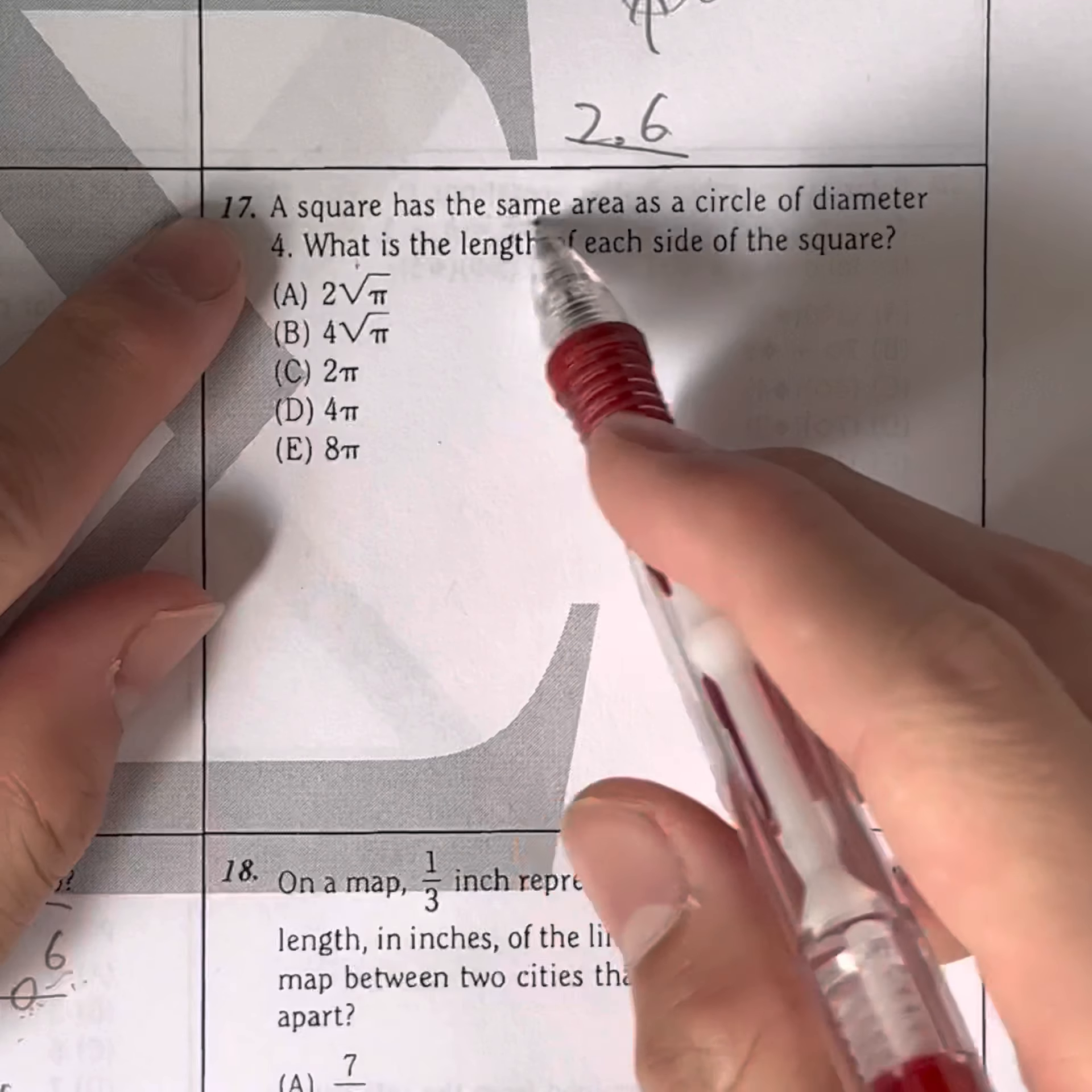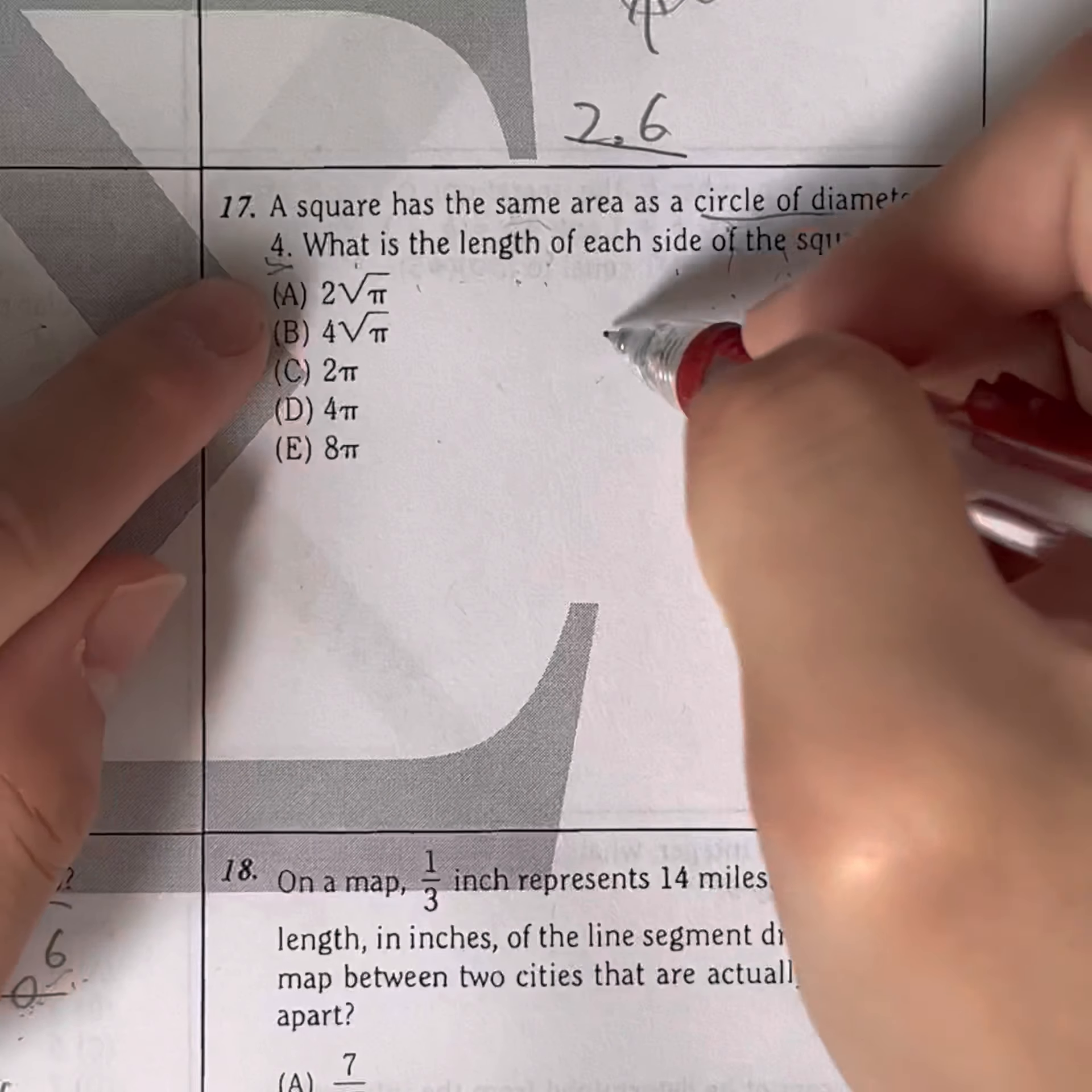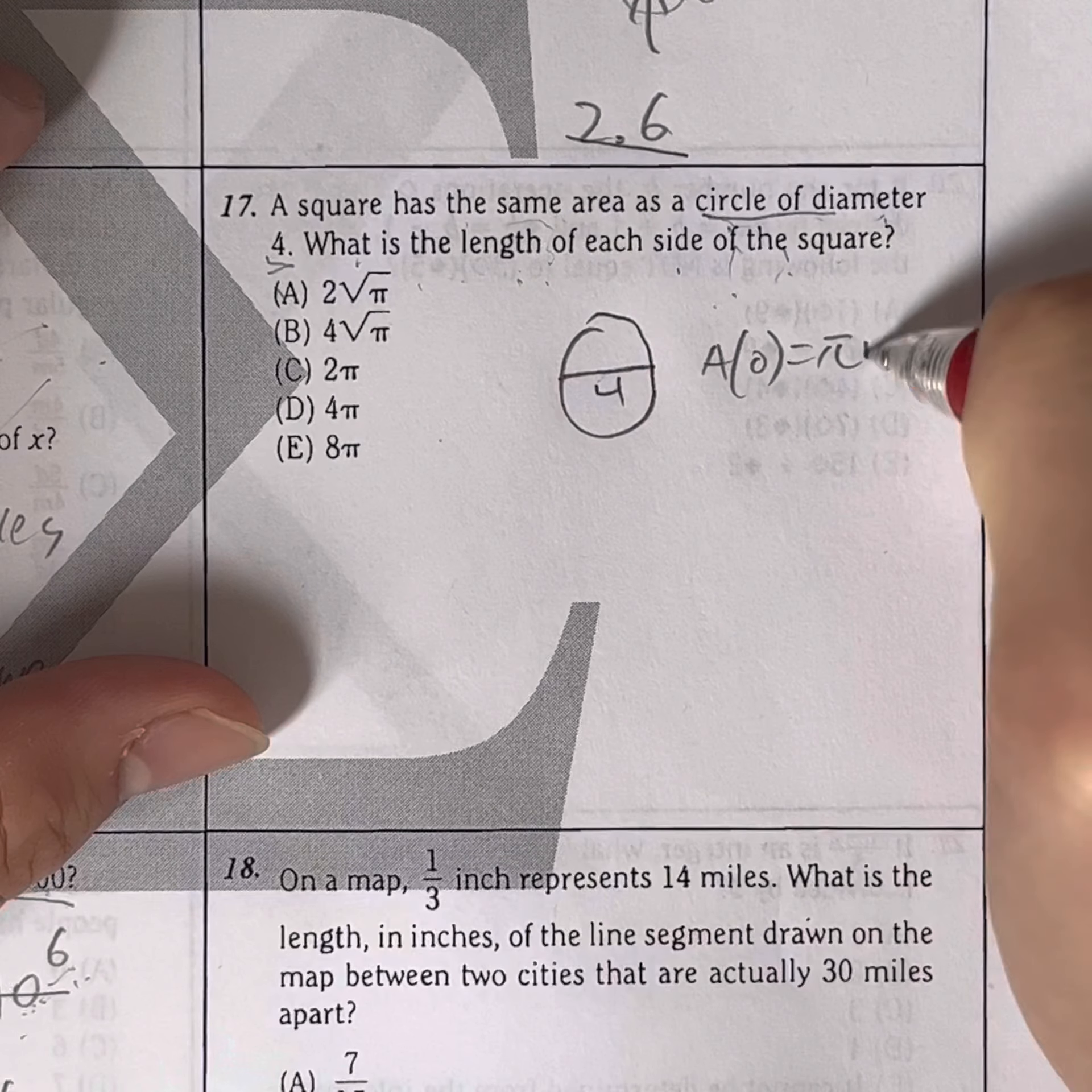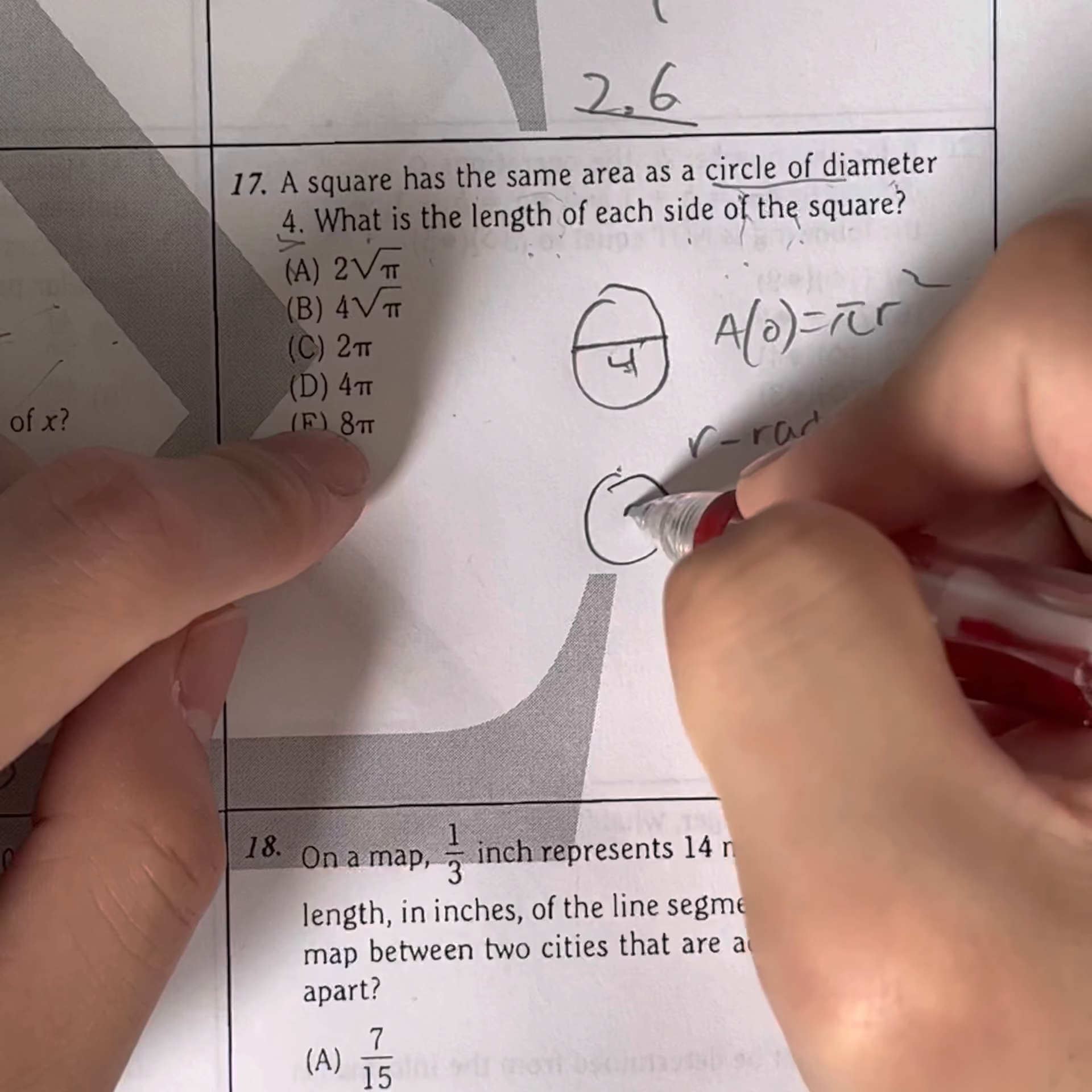Question 17. A square has the same area as a circle of diameter 4. What is the length of each side of the square? So basically, let's find the area of the circle first because we're given the diameter. So the diameter is this right here, the entire thing across. But what's the formula for the area of a circle? The area of a circle is equal to pi r squared, R representing our radius. So given diameter, how do we find a radius? All we have to do is divide the diameter by 2. So in this case, our radius is actually just equal to 2.